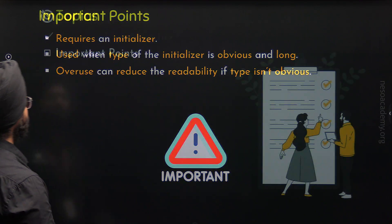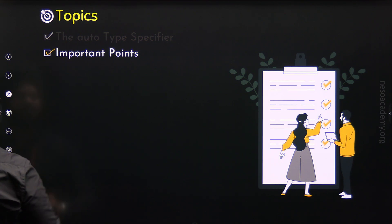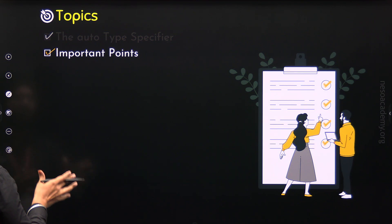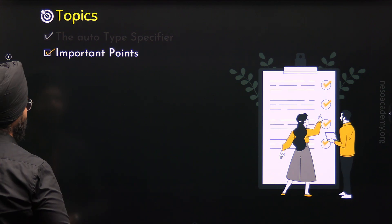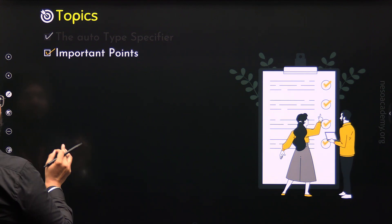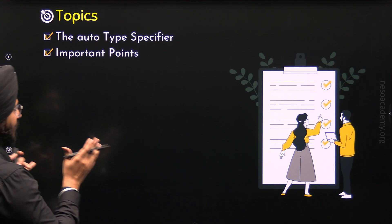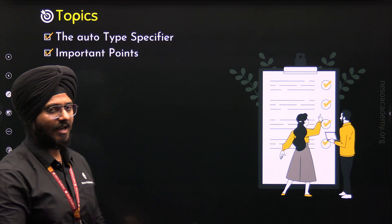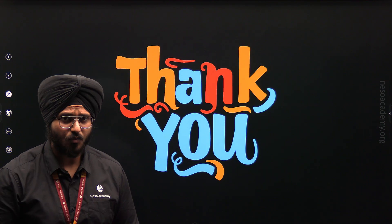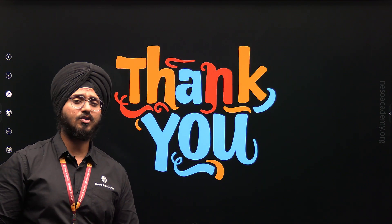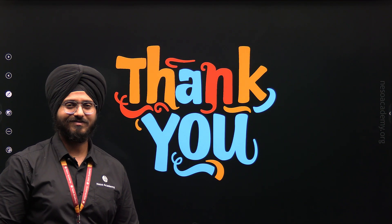With this, we have understood the second topic — important points based on the Auto Type Specifier — and we are done with this lecture. Okay friends, this is it for now. Thank you for watching this lecture. I will see you in the next one.